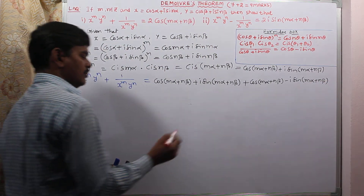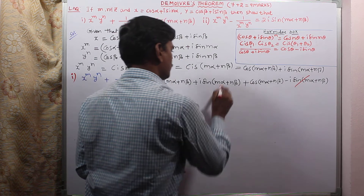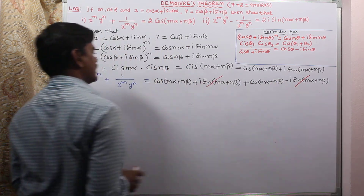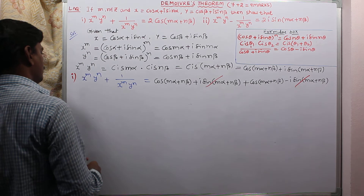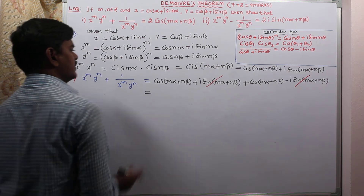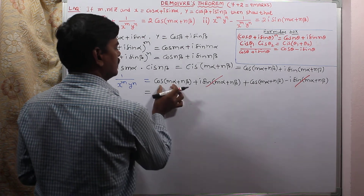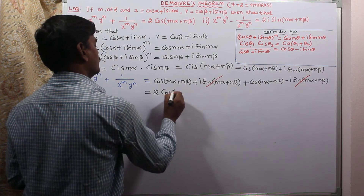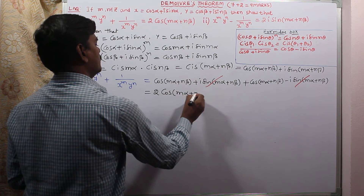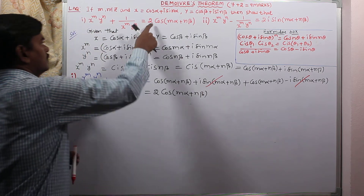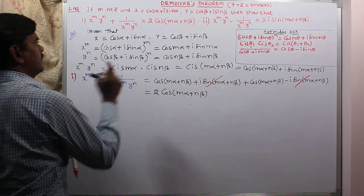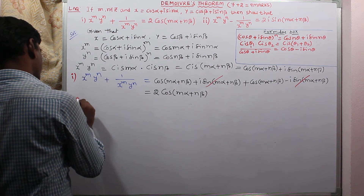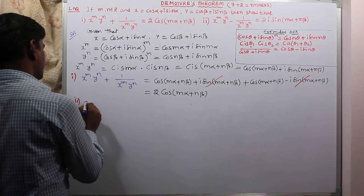On simplification, the i sin terms cancel because they have opposite signs. We are left with two times the same term: 2cos(mα + nβ). So the first result is proved: x^m · y^n + 1/(x^m · y^n) = 2cos(mα + nβ).